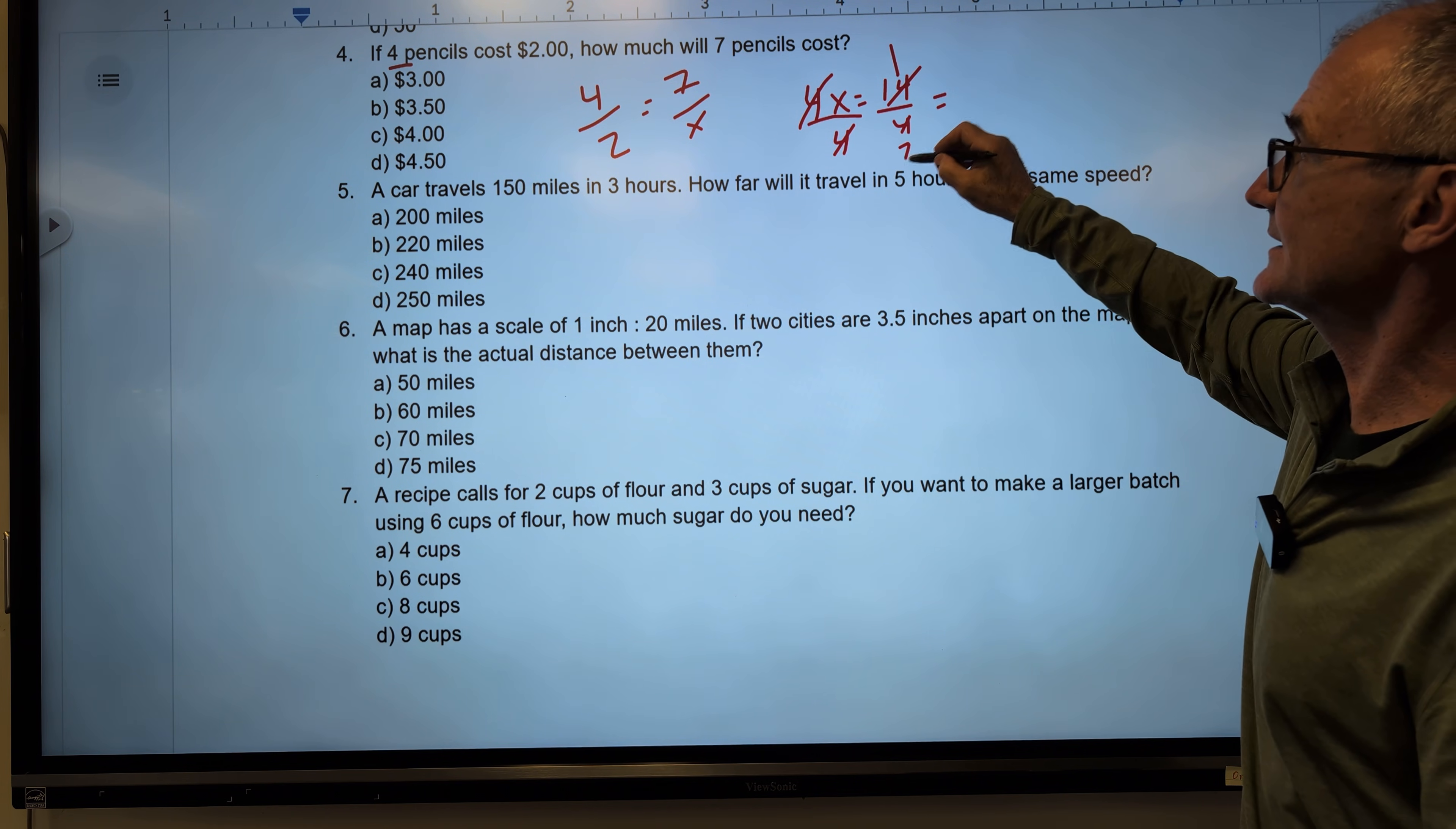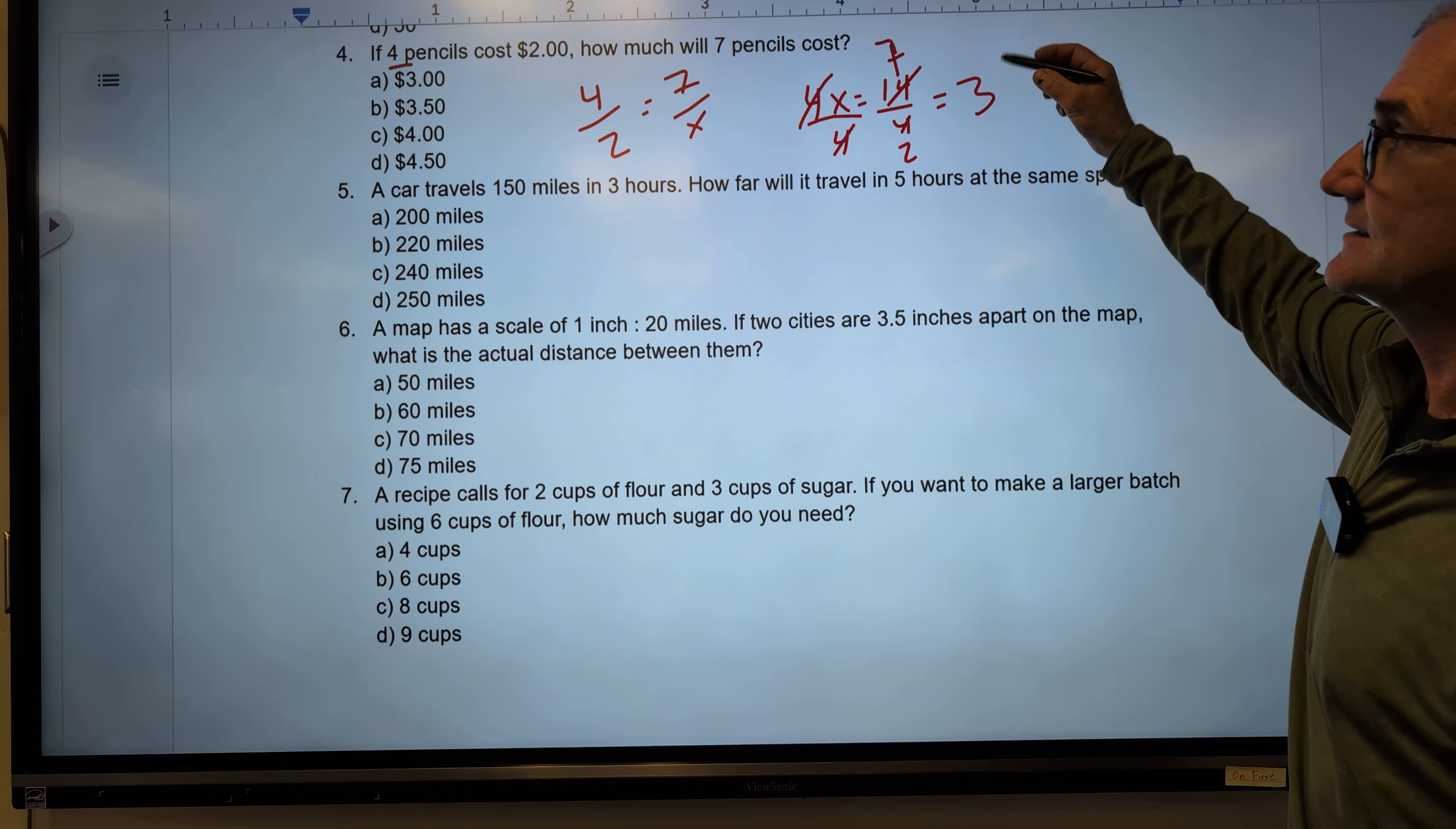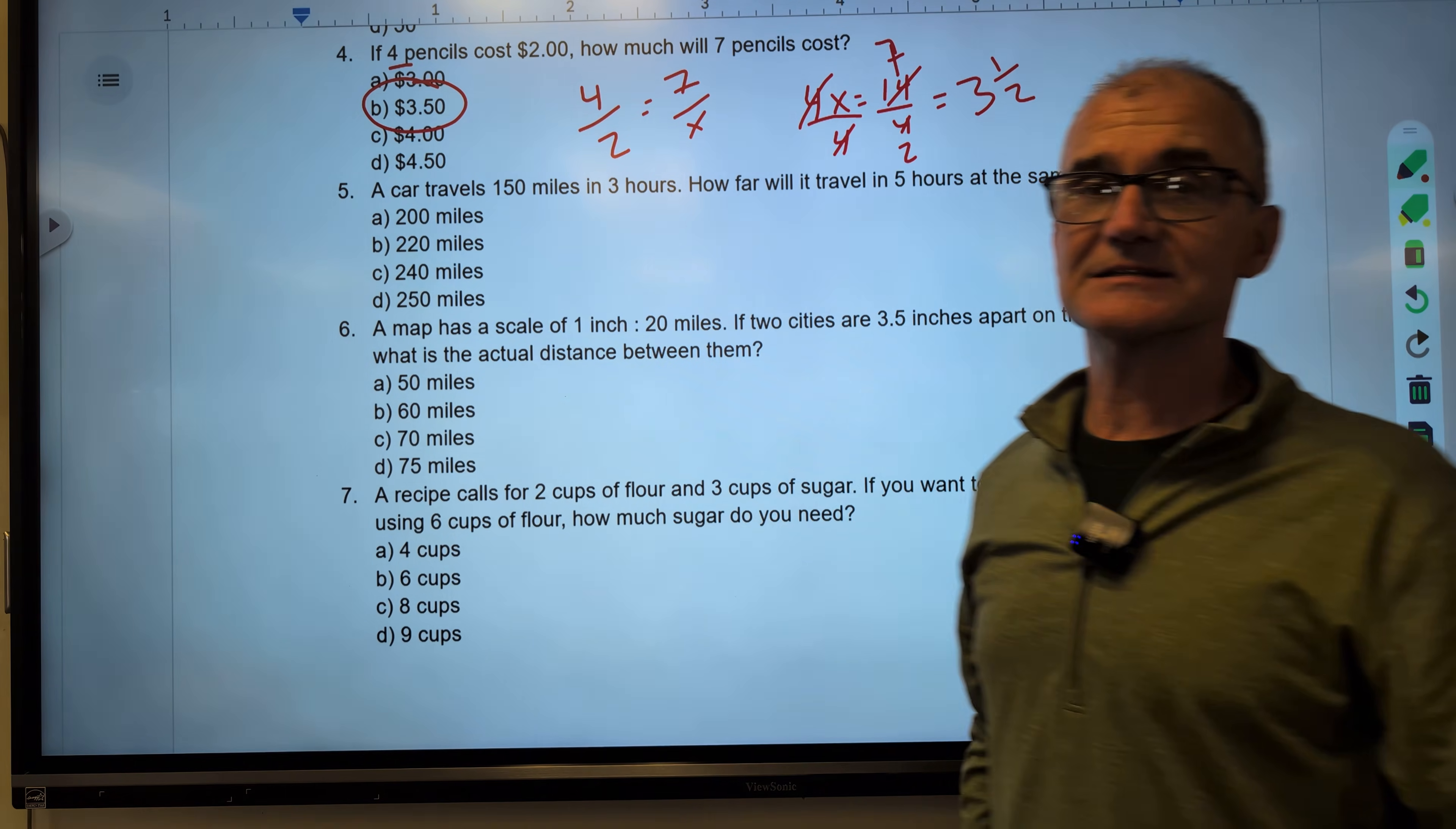2 will go into there 7 times. Then into there twice. So that's going to give me 7/2. 2 goes into 7 three times, leaving me with 3 and a half. So 3 and a half dollars will be $3.50. Again, remember to pause the video.